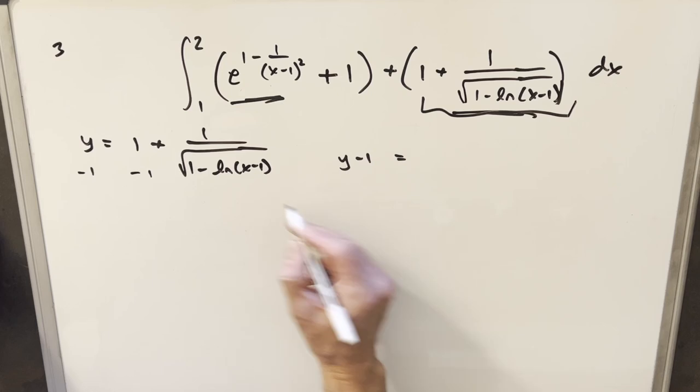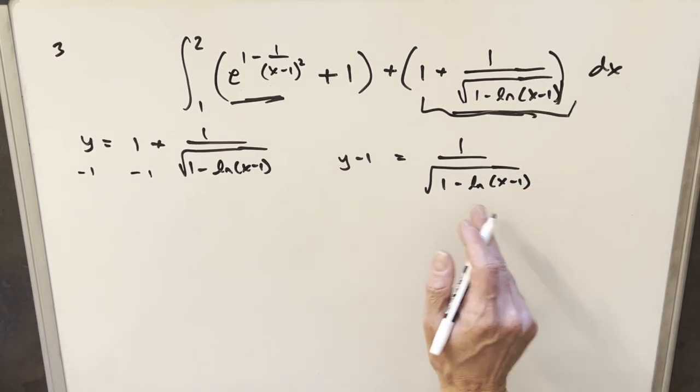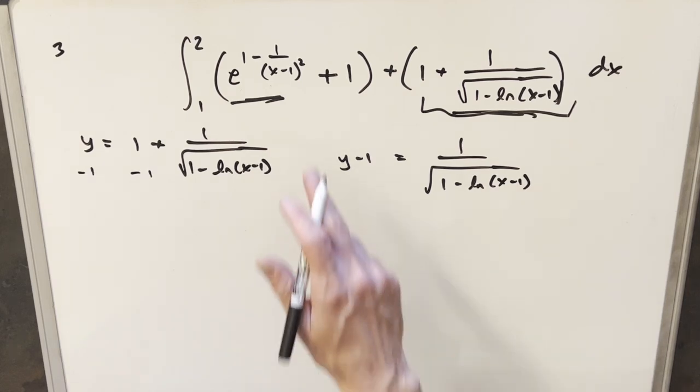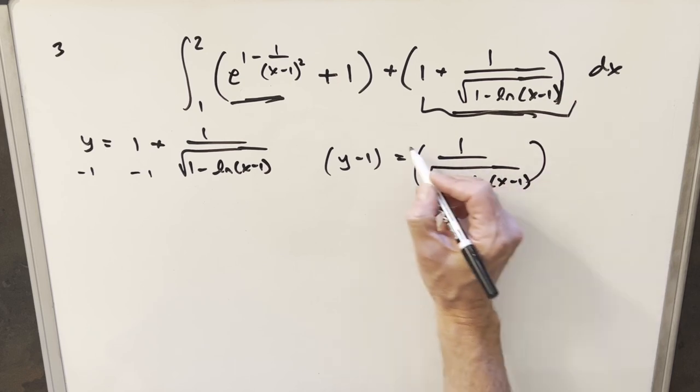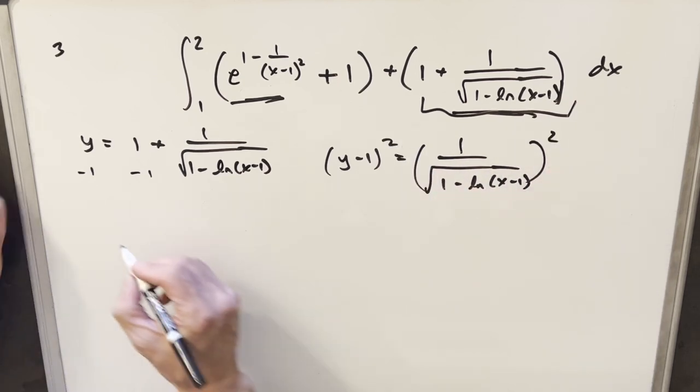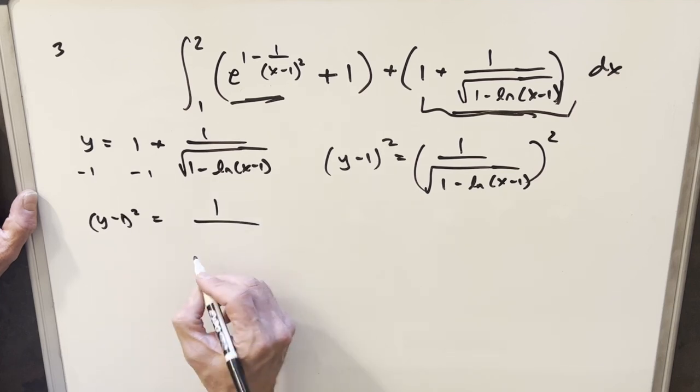And what I did was I wanted to solve for x. And you might know where I'm going with this. I'm trying to see if these are possibly inverses. Because if I solve for x, and I get back this, then I will know that they're inverses. So then next step here, what I can do is square both sides. So we'll have y minus one squared is going to be this thing over here.